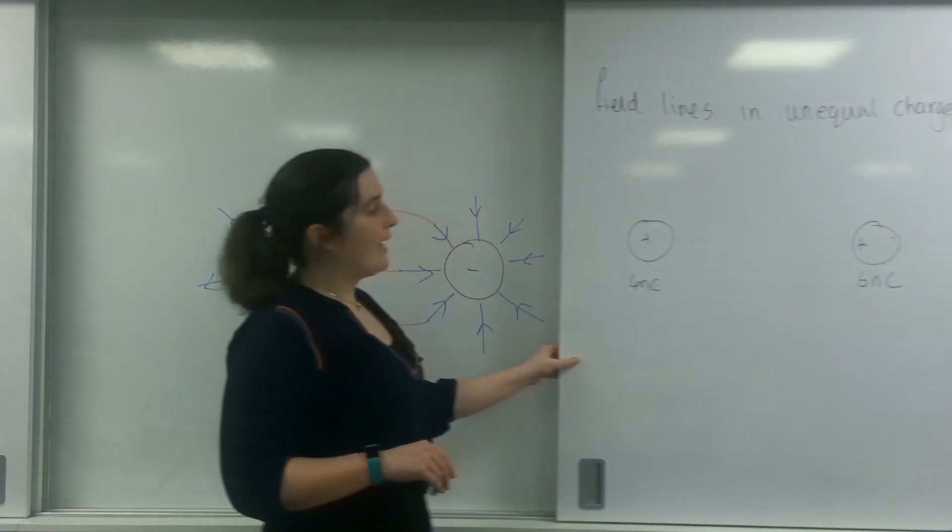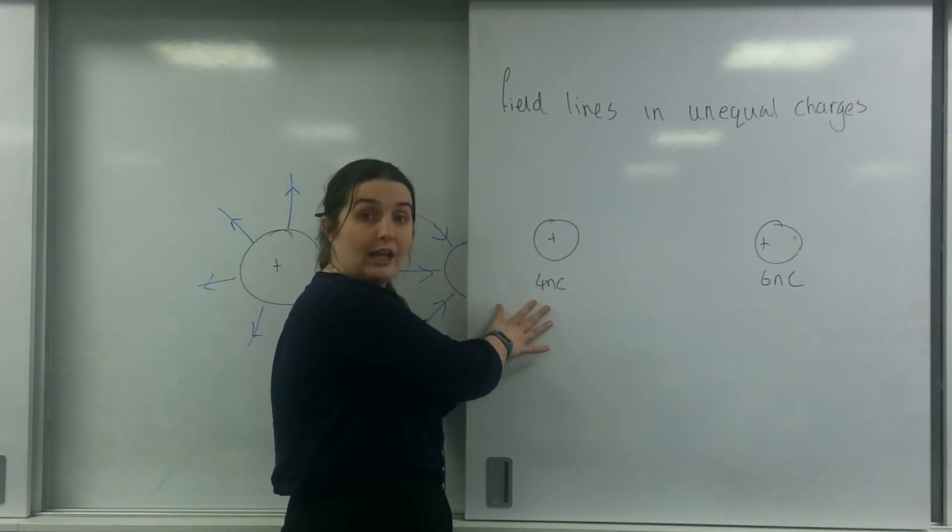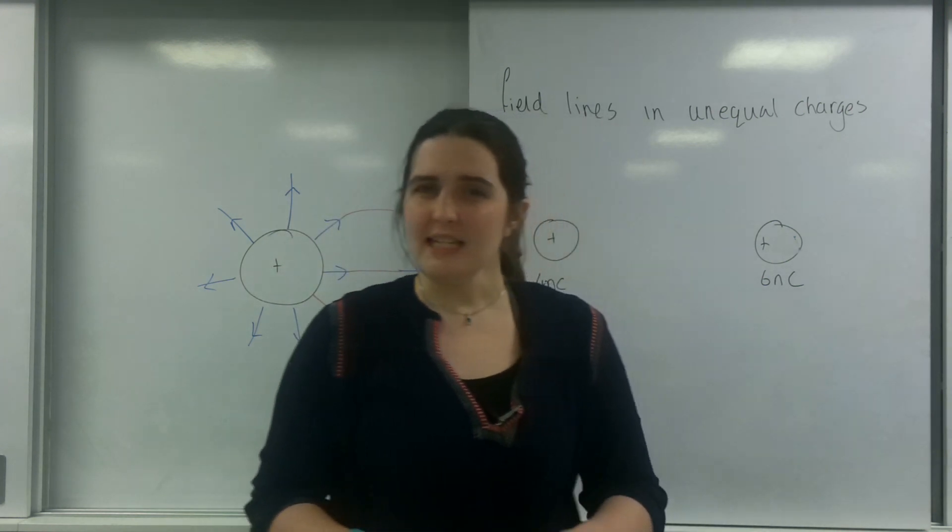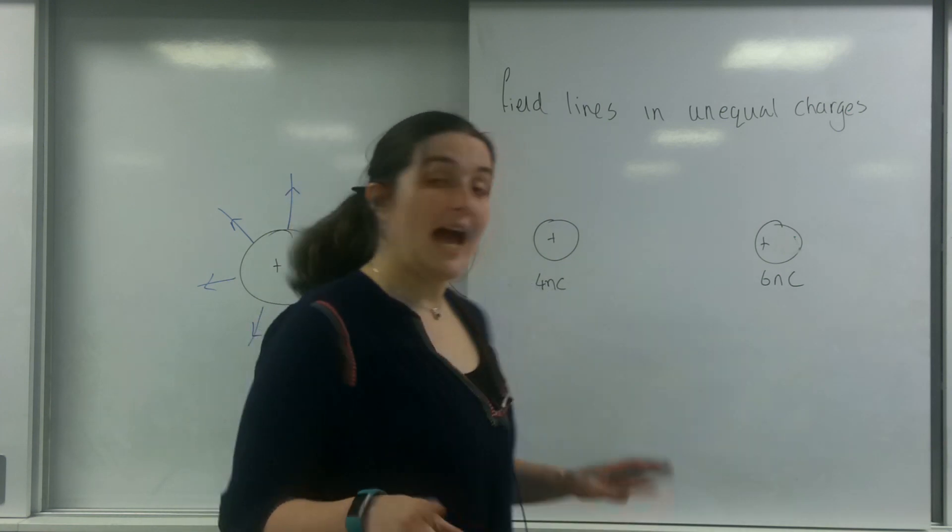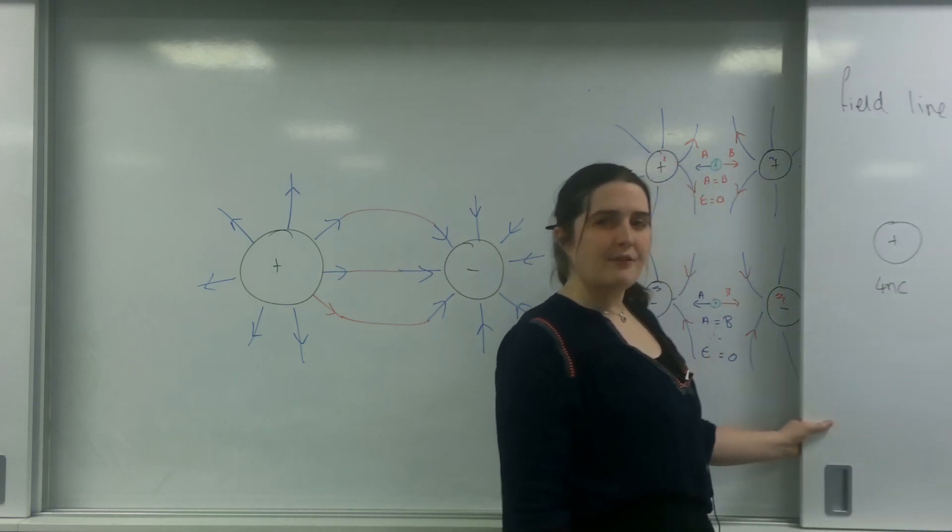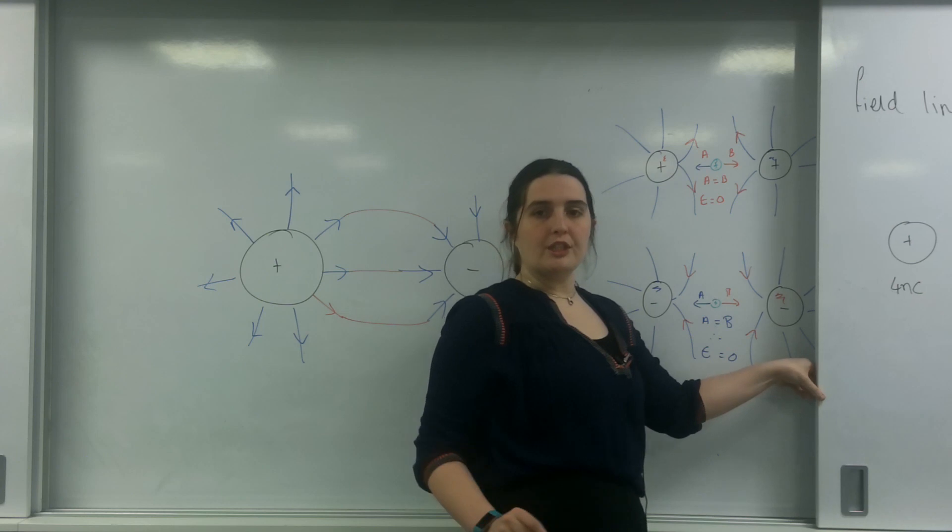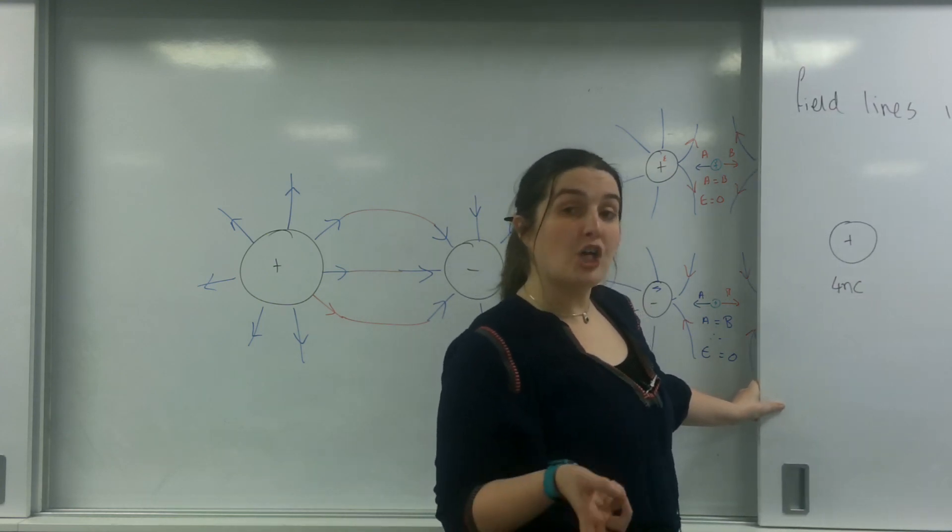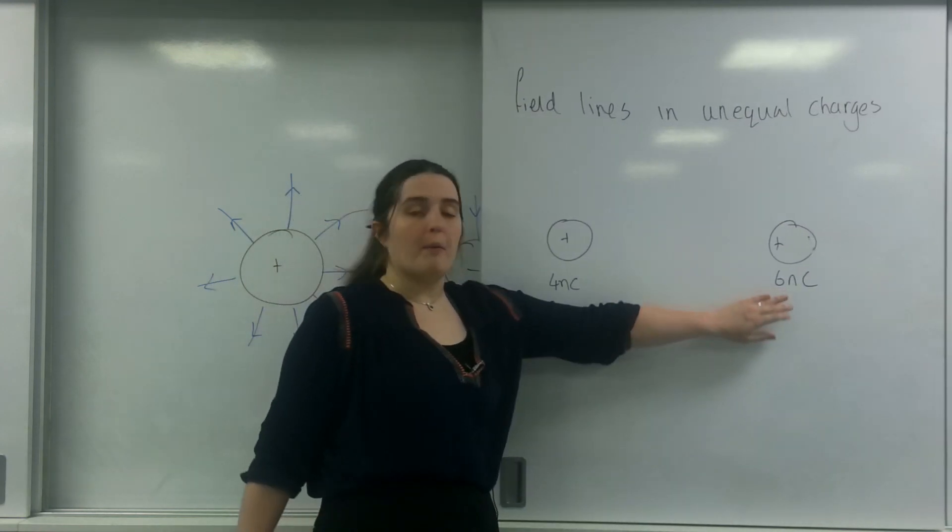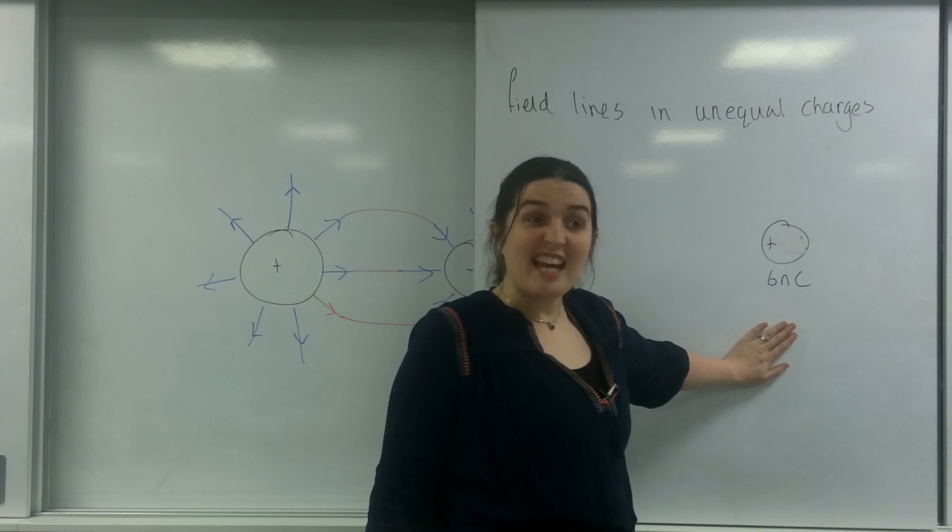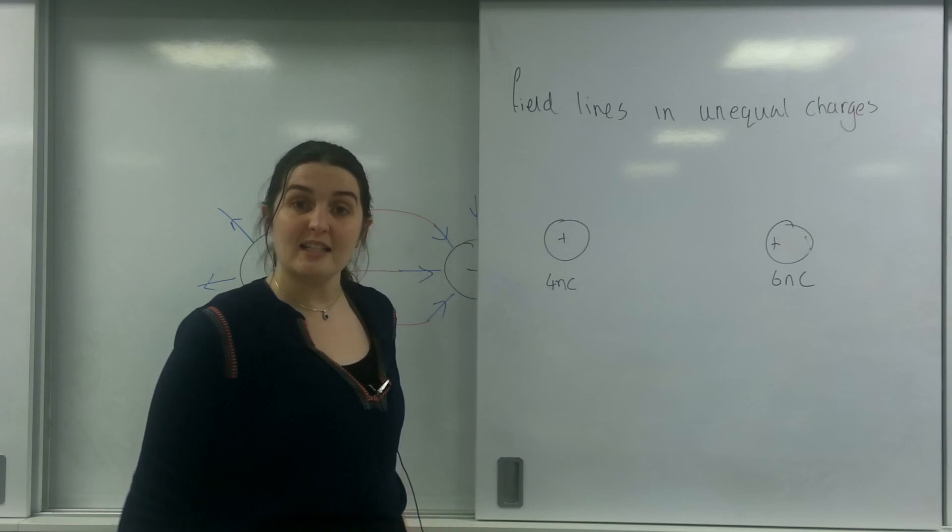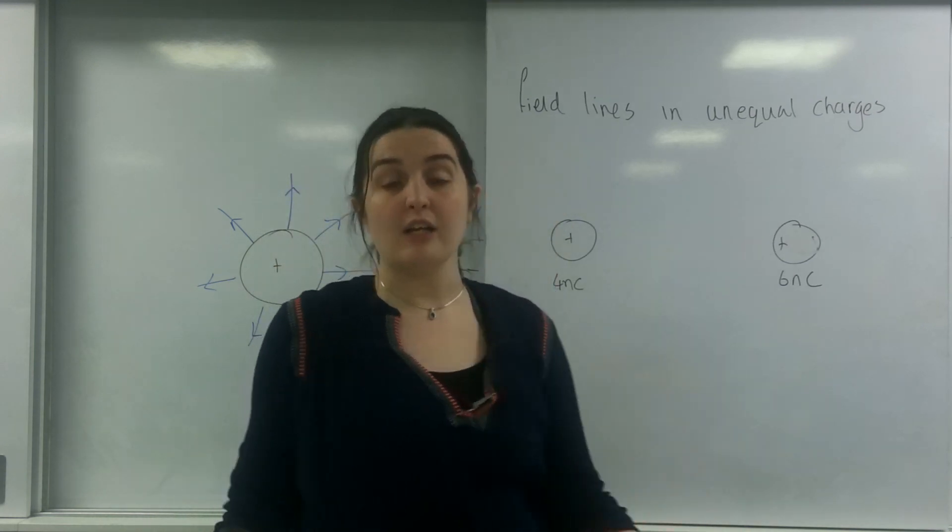So what I've got here is I've got a positive 4 nanocoulomb and a slightly bigger 6 nanocoulomb there. So these are both positive. So they are going to have the same diagram as here. But this is going to be something slightly different. Remember, this null region is the point where the forces are going to be equal in both directions. And this one, because it's got a bigger charge, it has got a stronger field.